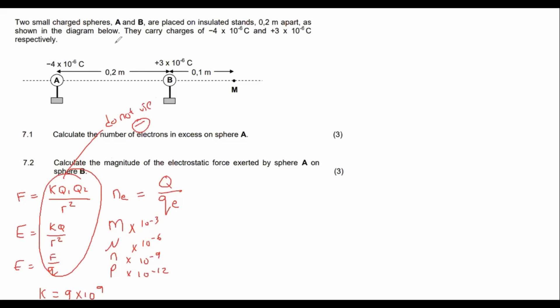So they tell us that we have two spheres, A and B are placed in insulated stands, blah, blah, blah. They carry charges. Okay. So everything that they've told us is on the diagram, calculate the number of electrons in excess on sphere A. Now I'll be honest. I know that some of you read that and you think, what, I don't even understand what that means. It sounds easy, but I don't really understand what they're talking about. I know. So let me explain it.